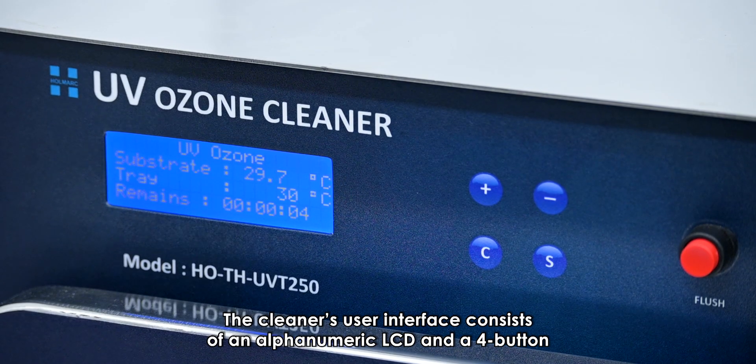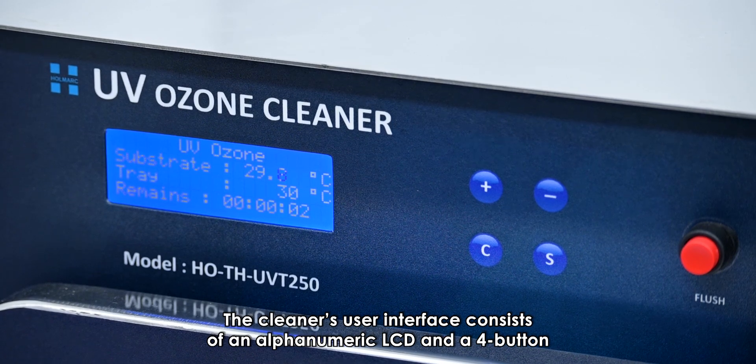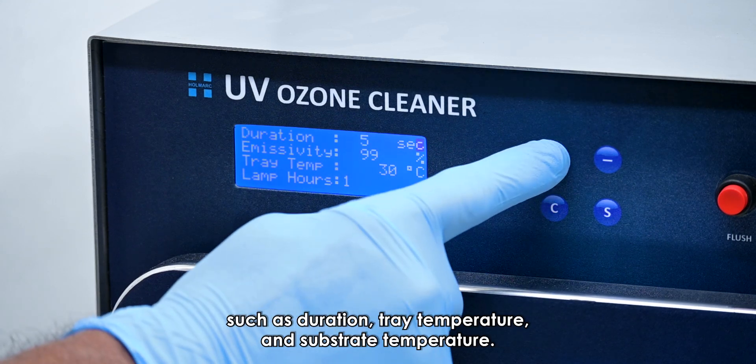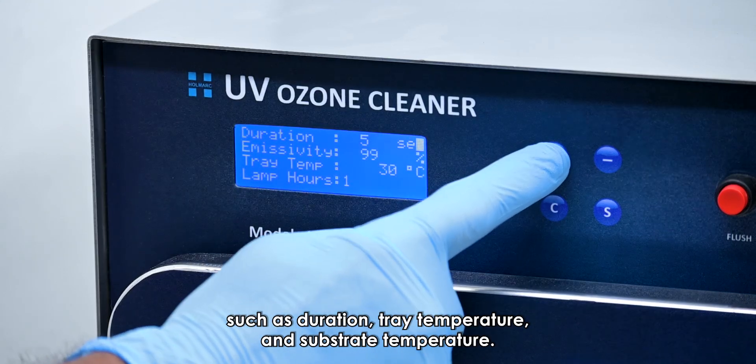The cleaner's user interface consists of an alphanumeric LCD and a four-button keyboard, allowing operators to set and monitor cleaning parameters such as duration, tray temperature, and substrate temperature.